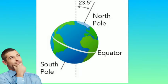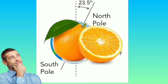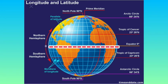The equator is an imaginary line that divides the earth into two equal halves. Imagine an orange — it's flat on both ends and bulging near the middle. If you cut the orange into two equal halves from the middle, the upper part is called the northern hemisphere and the lower part is the southern hemisphere. The line through which we cut is the equator, so the equator divides the earth into two different halves.